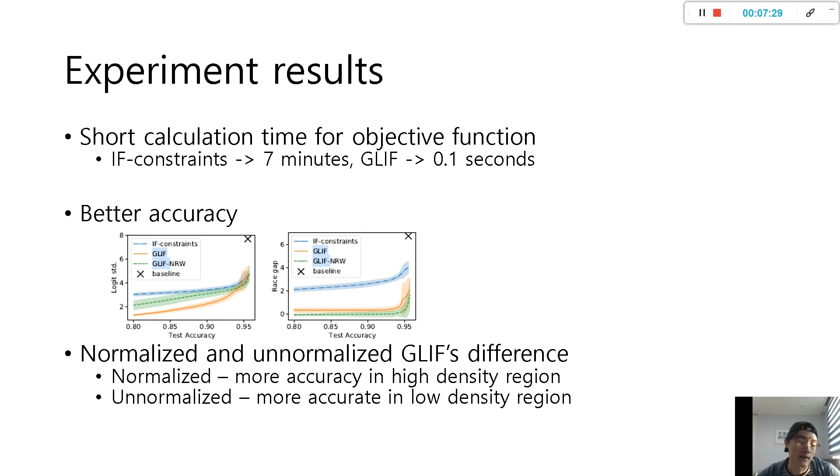Firstly, GLIF has a short time to derive objective function that only takes 0.1 seconds, compared to IF-constraints which takes 7 minutes, so it is a huge difference in calculation time. And also, as shown in the graph, GLIF has more accuracy in same logistic standard deviation and race gap.